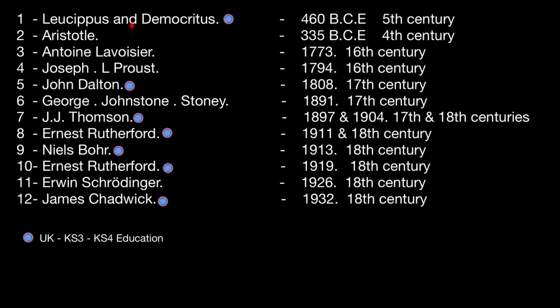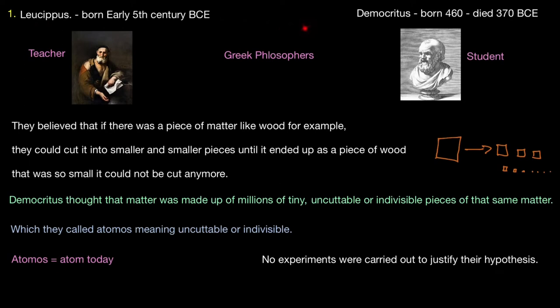We're going to look at the Greek philosophers and scientists from Democritus to James Chadwick. Leucippus and Democritus in the 5th century BCE. Leucippus was the teacher and Democritus was the student. Both believed that a piece of matter like wood, if you cut it to half and half again, repeatedly, until it becomes so small that you cannot cut it anymore. Democritus thought that matter was made up of millions of tiny uncuttable or indivisible pieces of that same matter, which they called atomos, meaning uncuttable or indivisible. Atomos is what we call atom today. They did not carry out experiments to justify their hypothesis.